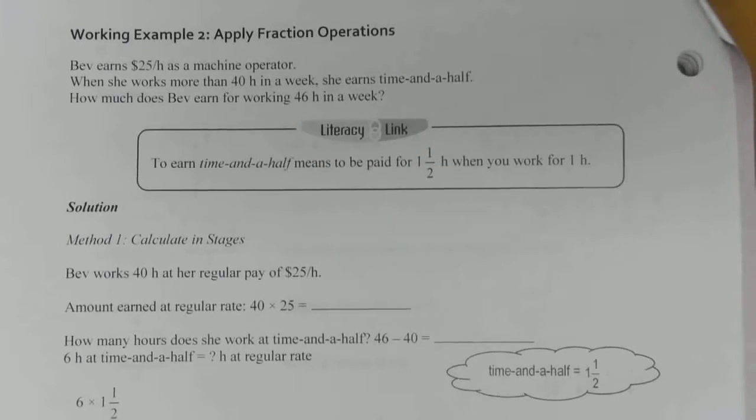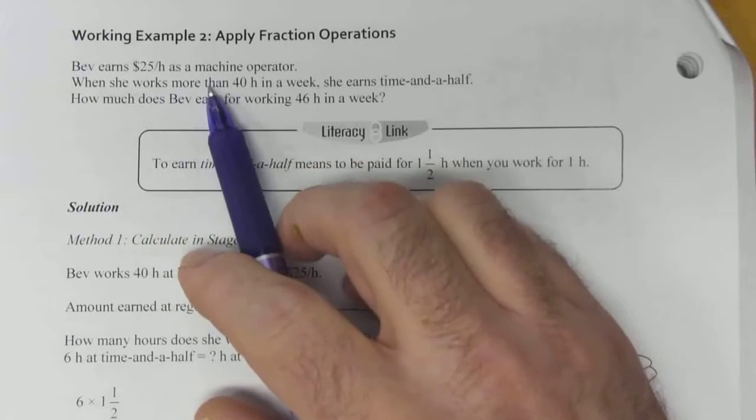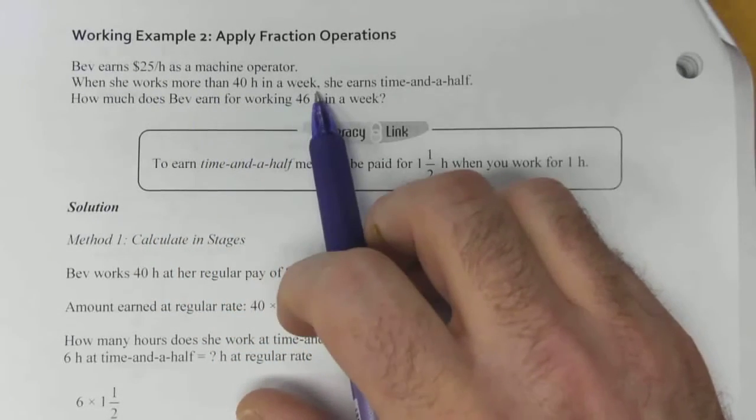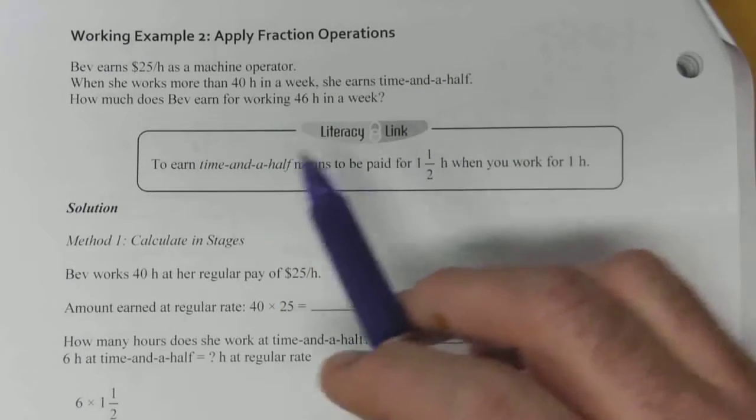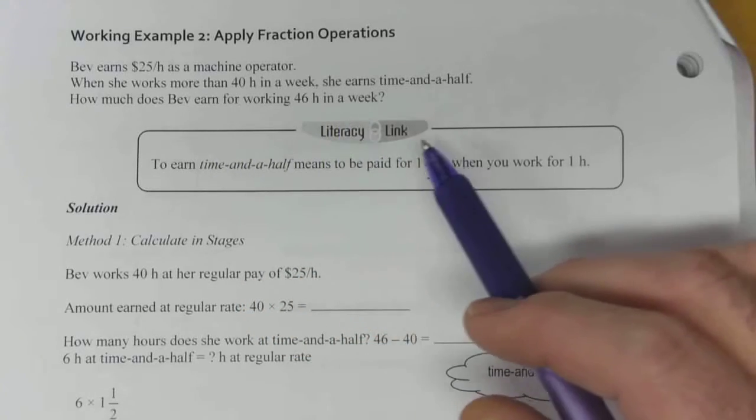Example number two, applying fraction operations. Bev earns $25 per hour as a machine operator. When she works more than 40 hours in a week, she earns time and a half. That's overtime pay. How much does Bev earn for working 46 hours in a week?